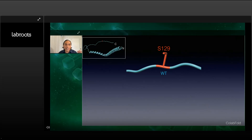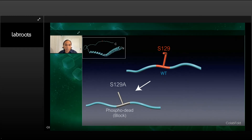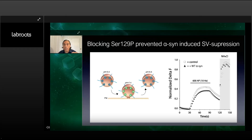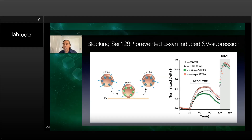From previous studies we know that converting serine to alanine blocks phosphorylation, creating phospho-dead mutants. At the same time, converting serine to aspartic acid creates a mutant that mimics phosphorylation. Using this approach, we examined synaptic vesicle recycling and found that when we introduce the phosphomimetic mutant, we observe further suppression of synaptic vesicle recycling. On the other hand, the phospho-dead mutant that blocks phosphorylation at serine 129 shows no effect on recycling. This data suggests that serine 129 phosphorylation has a physiological role.